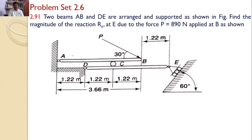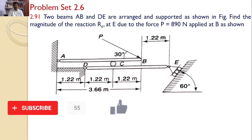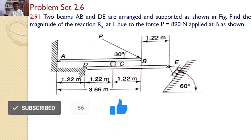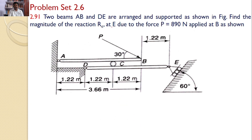Two beams AB and DE are arranged and supported as shown in the figure. Find the magnitude of the reaction RE at E due to the force P equal to 890 N applied at B as shown in the figure.